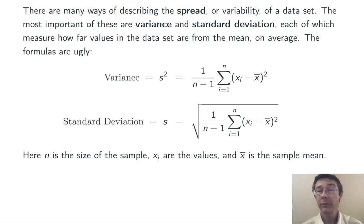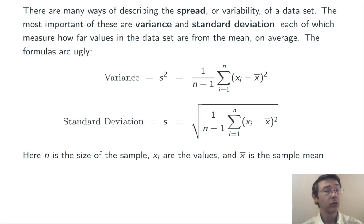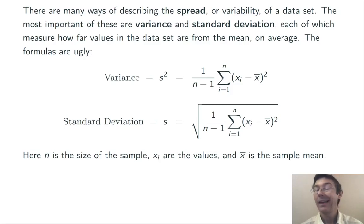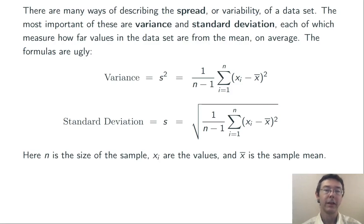The formulas are pretty ugly — here they are. Here n is the total size of the sample, xi represents the values in the data set, so like x1, x2, x3, and so on. And x-bar — that x with the line over it — is the sample mean.